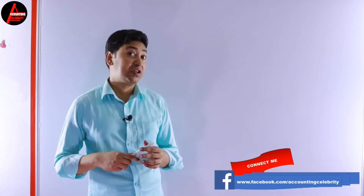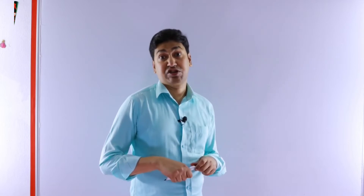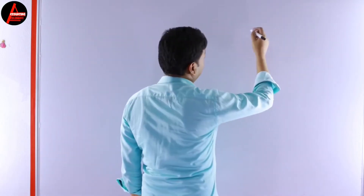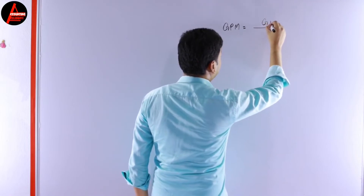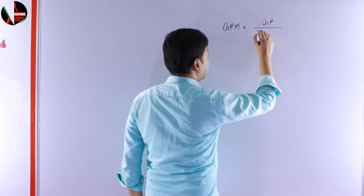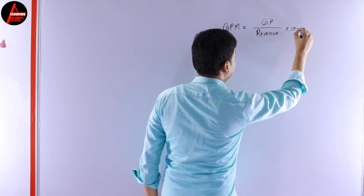Return on capital employed can sometimes be very confusing to calculate. So today you will understand how to calculate it. But first, we will calculate the gross profit margin. The formula for gross profit margin is: gross profit margin equals gross profit divided by sales revenue, times 100.